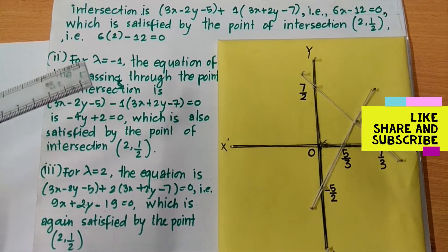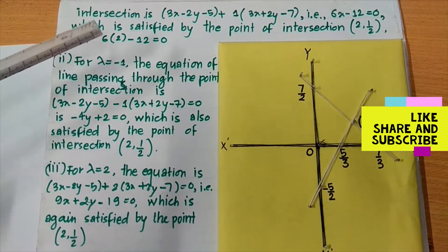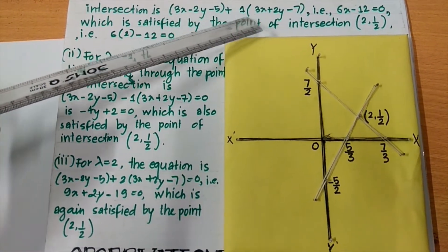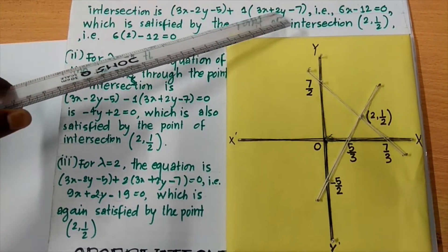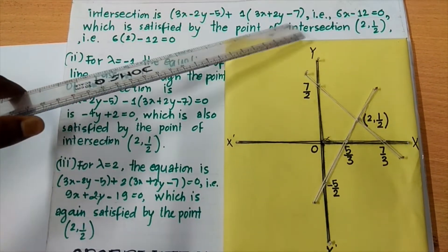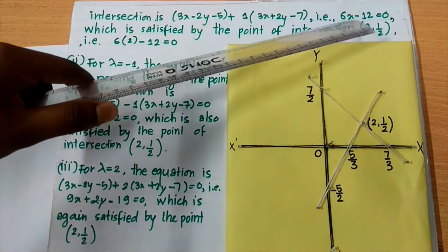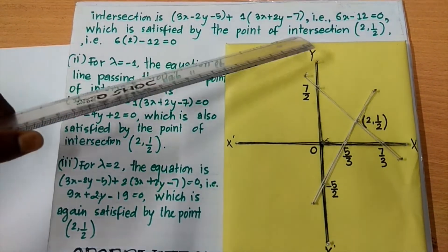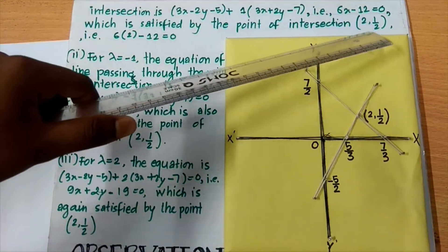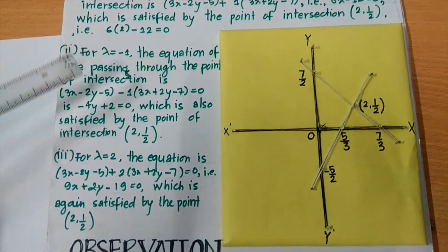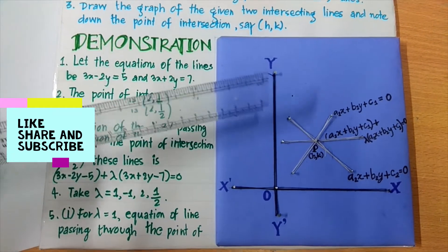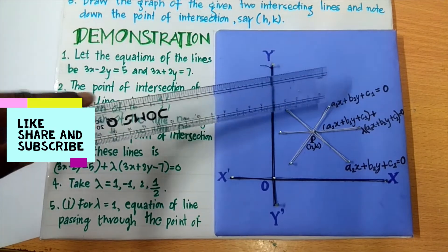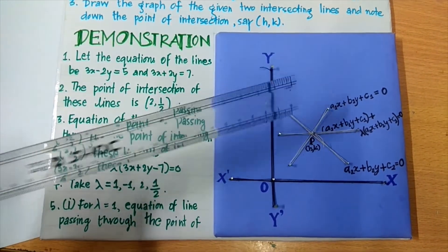For lambda equals to 1, the equation becomes 3x minus 2y minus 5 plus 1 into 3x plus 2y minus 7 equals to 0. On solving, this gives 6x minus 12 equals to 0, which is satisfied by the point of intersection (2, 1/2). So the equation 6x minus 12 equals to 0 passes through the point of intersection of the two lines.